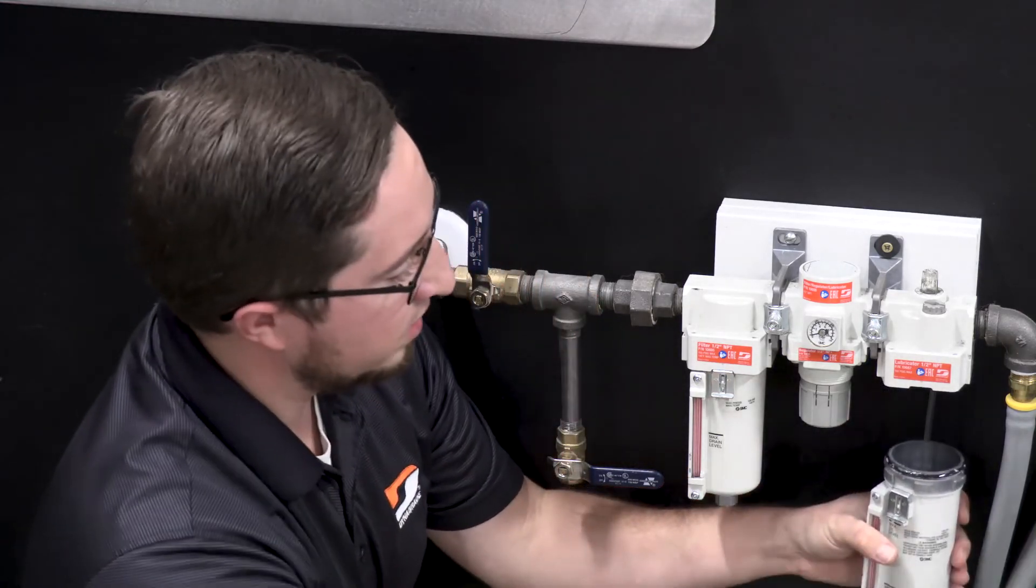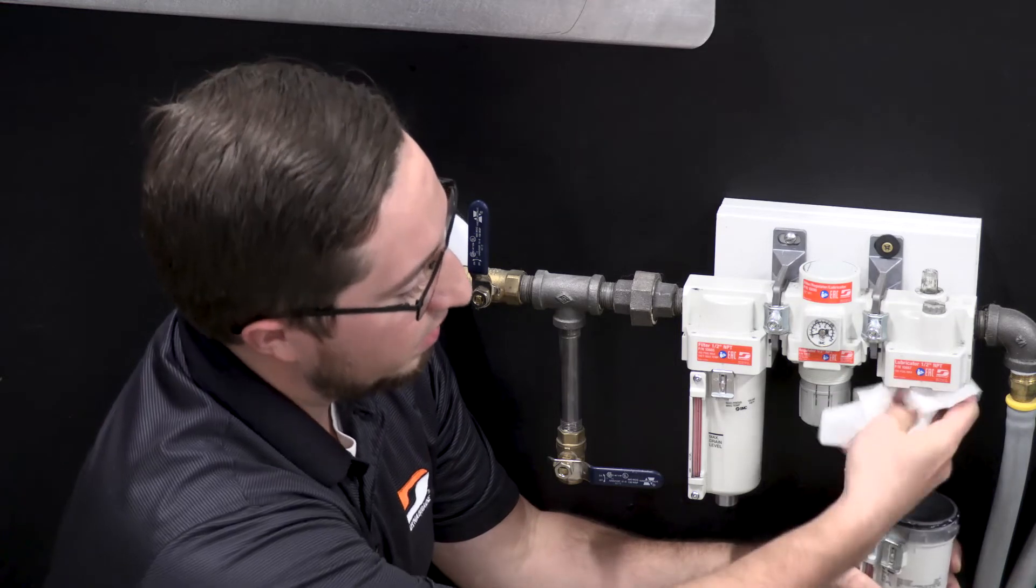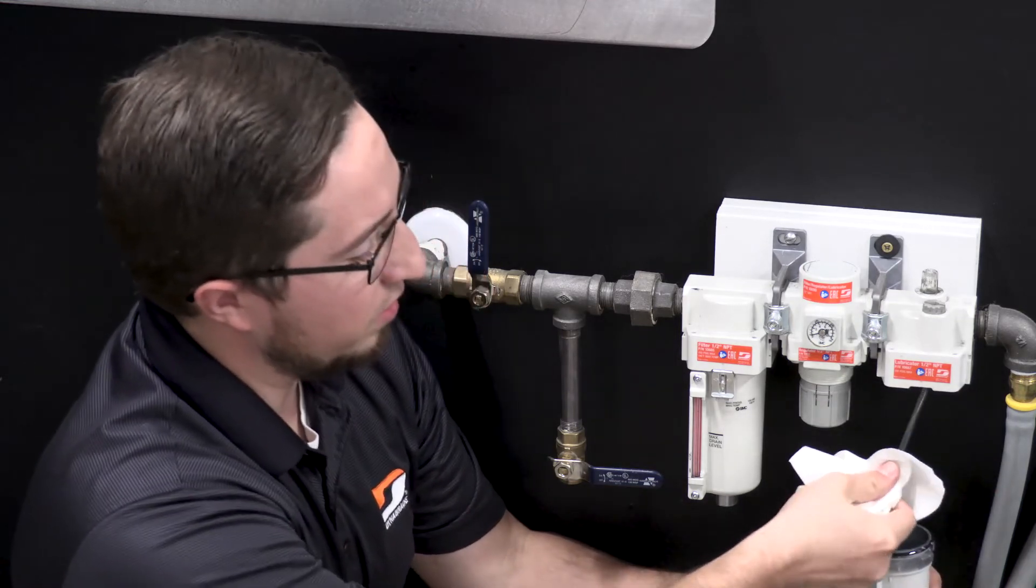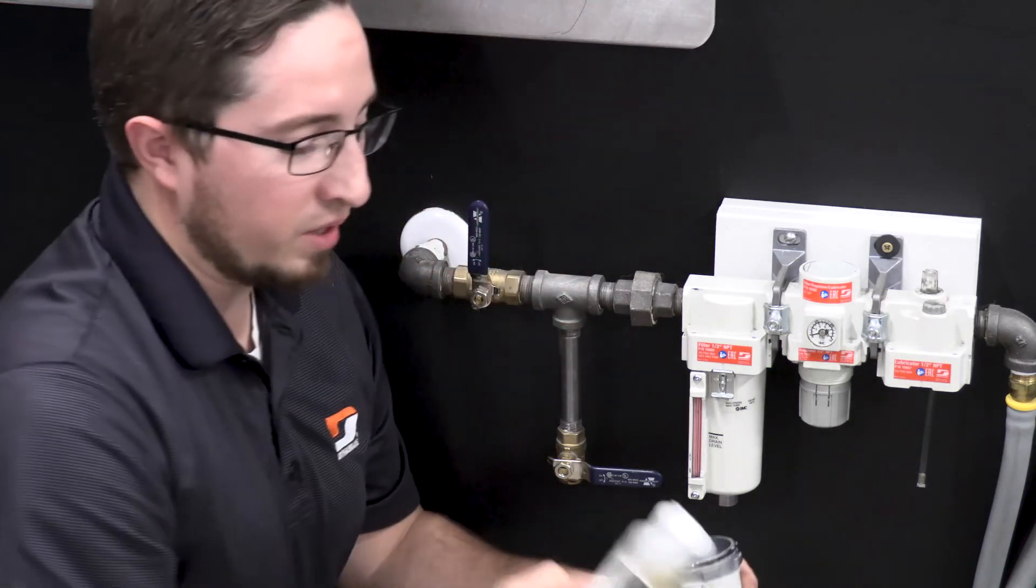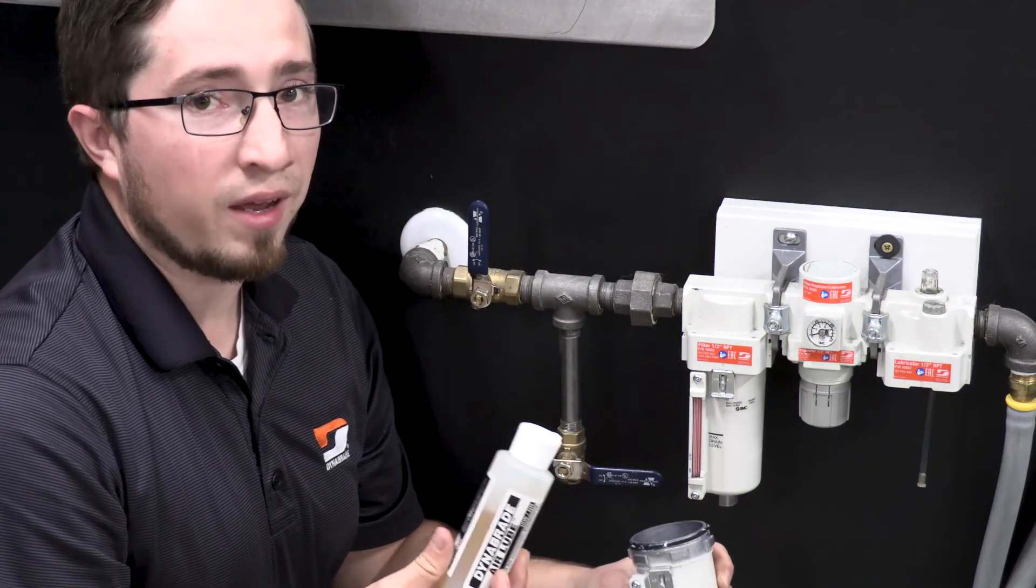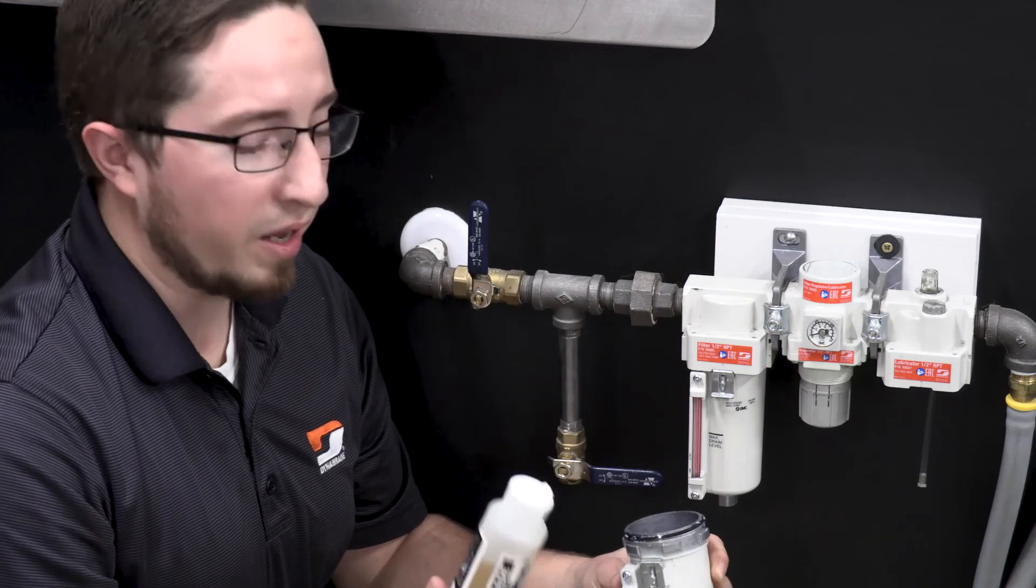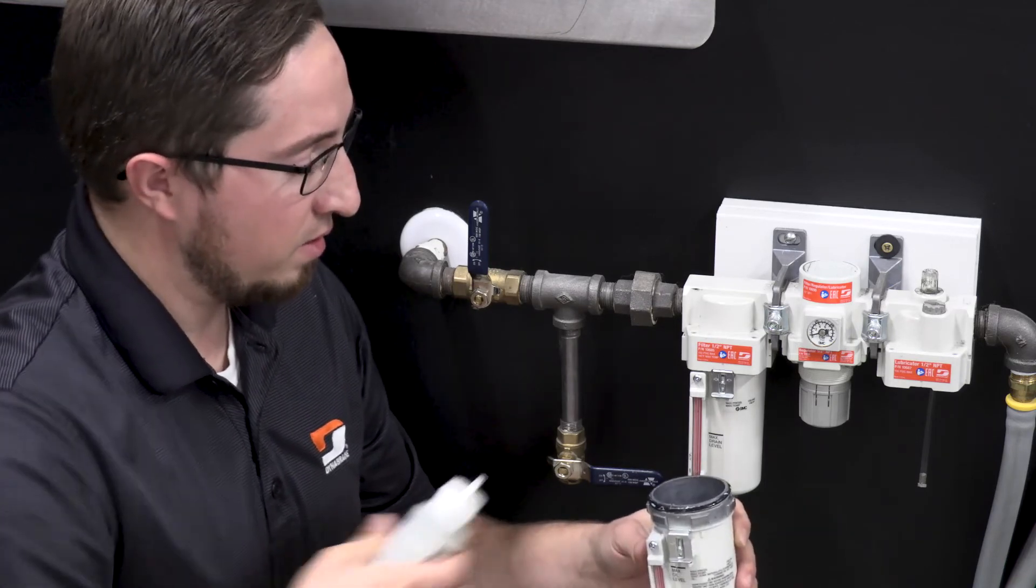There is a small tube on the inside here that you want to make sure you keep a rag on. I always wipe it off just to ensure that no lubrication gets onto the floor to keep things a little safer. Then using DynaBraid air lube or 10 weight non-detergent air lubrication, refill your lubricator as needed.